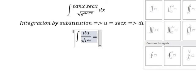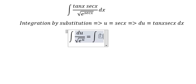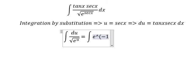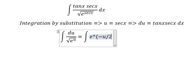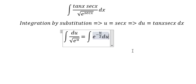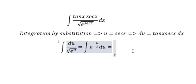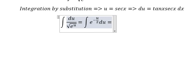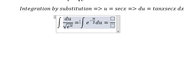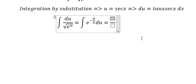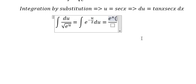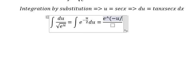We can write this as e to the power minus u over 2 du. Now we integrate e to the power minus u over 2. This gives us e to the power minus u over 2.